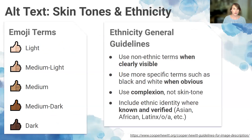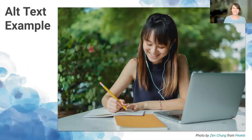On ethnicity and skin tone in alt text: use non-ethnic terms such as 'light or dark complexion' when clearly visible. Because of widespread use, the emoji terms for skin tone are recommended. Where skin tone is obvious, more specific terms such as 'black' or 'white' can be used, or where known and verified, ethnic identity can be included with the visual information. Cerise will now show an example of alt text and then cover design, layout, readability, and use of color.